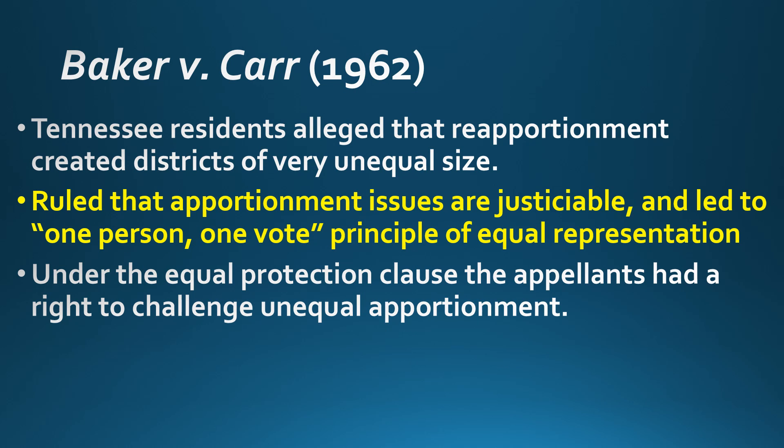Baker versus Carr: in 1962, Tennessee residents alleged that reapportionment was creating congressional districts of very unequal population size. The court ruled first that apportionment issues are justiciable — meaning courts have the power to rule on these issues. This led to the one person, one vote principle of equal representation, meaning all people's votes should count equally. Under the Equal Protection Clause, appellants had the right to challenge unequal apportionment, and today malapportionment has been determined to be unconstitutional.